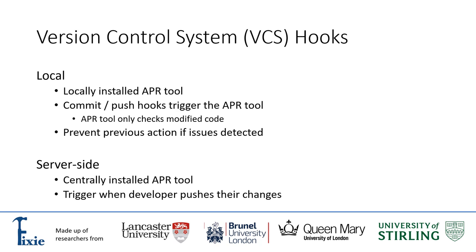Many version control systems provide hook-like functionality to execute some arbitrary task and can be either local or server side. A hook could theoretically be configured to prevent the addition of faulty code into the main repository, requiring that all or some of the more concerning issues are resolved before progressing to the next stage. By using local hooks, the tool would need to be installed locally on every developer system and would trigger on specific actions such as commit or push.